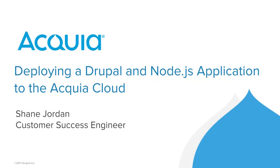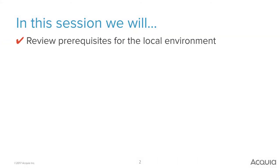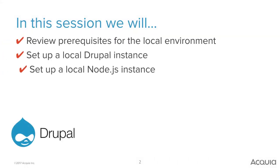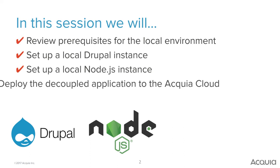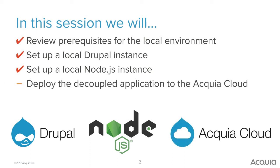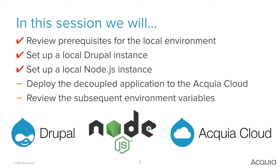In this part of the Node.js and Drupal application tutorial, we're going to discuss deploying your Drupal and Node.js application to the Acquia Cloud. Previously we went over the prerequisites for the local environment, set up our local Drupal instance, and our local Node.js instance, and made sure that both of them were communicating with each other. Now we'll discuss how to deploy them to the cloud and also discuss Node.js environment variables.